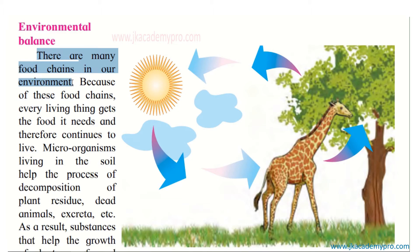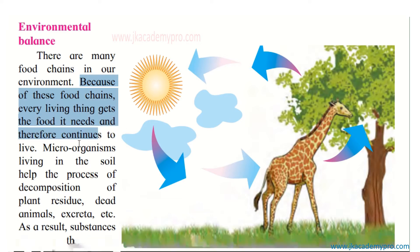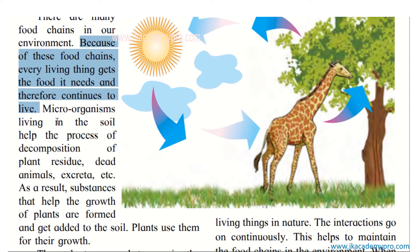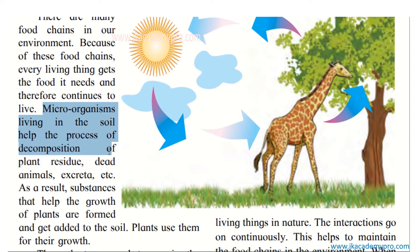There are many food chains in the environment — they are all interdependent and form a food web. Because of these food chains, every living thing — whether plants, animals, or microorganisms — gets the food it needs and continues to live. There are animals that eat only plants and animals that eat those animals.